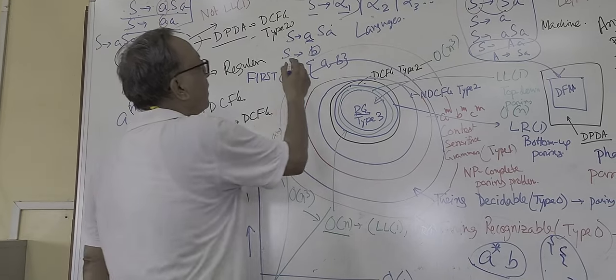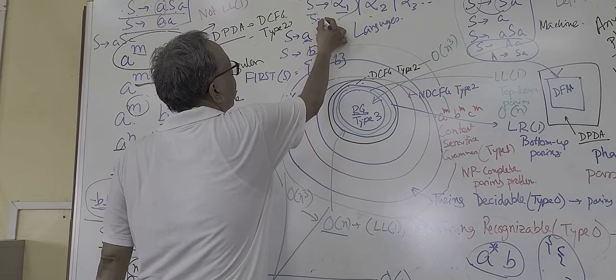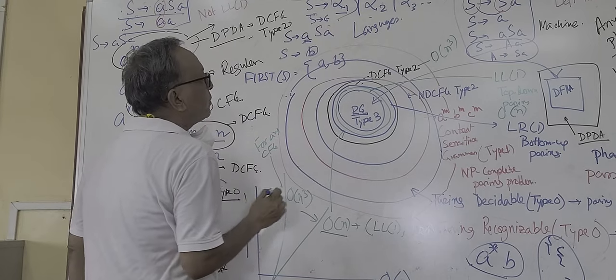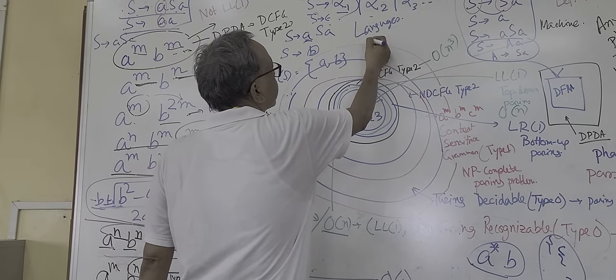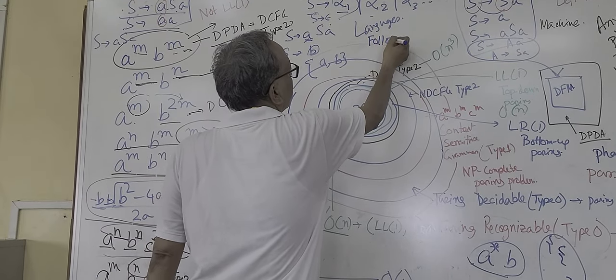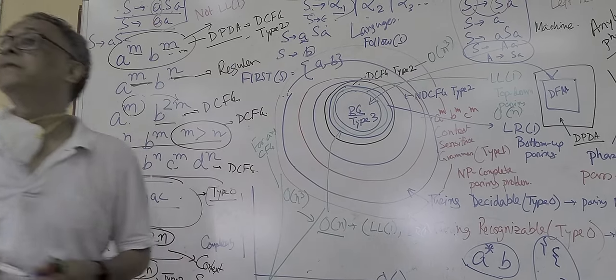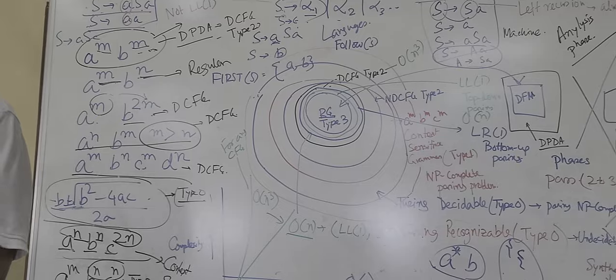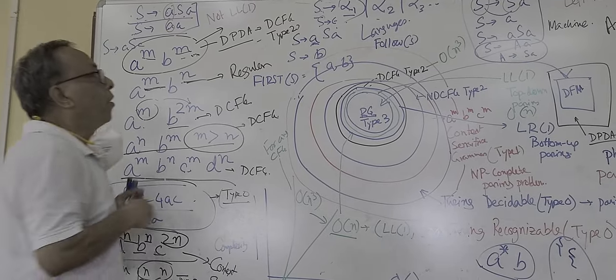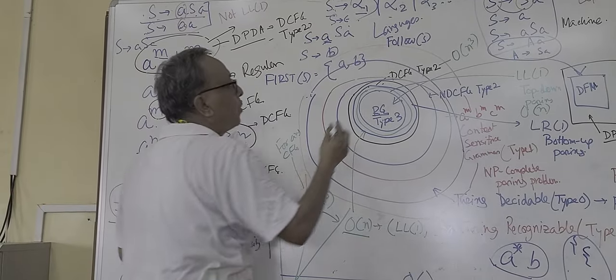And if the variable S goes to epsilon, I have to take the follow of S. What is follow of S? Follow of S is dollar. We always think that there is always a dollar sign. Follow of S is dollar.